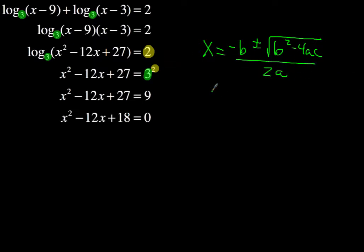Now, our a value, of course, is 1, our b value is negative 12, and then our c value is positive 18. So we're going to use those values and plug them into the quadratic formula. One step at a time, inch by inch, it will be a cinch.